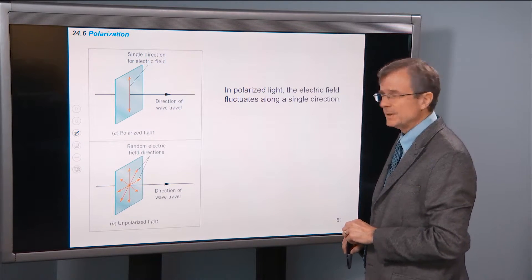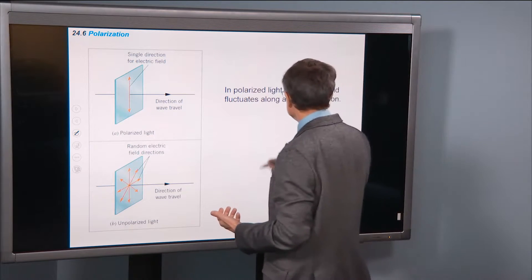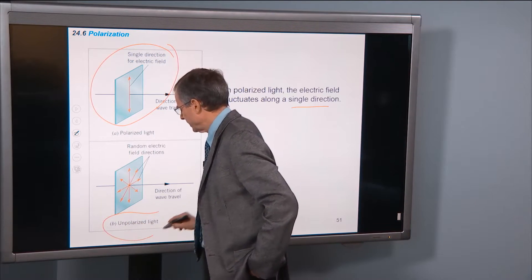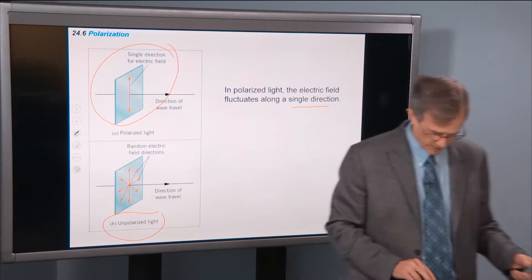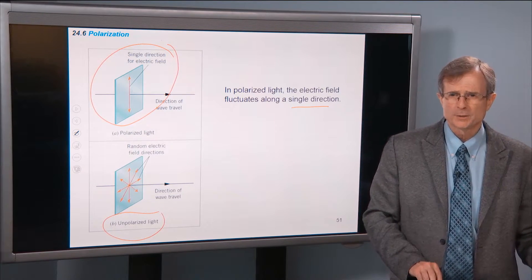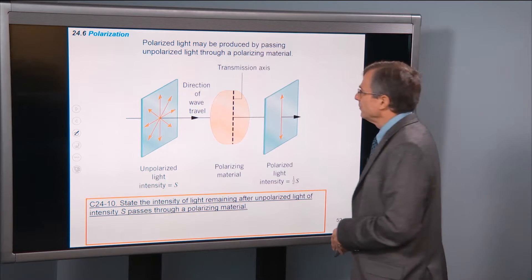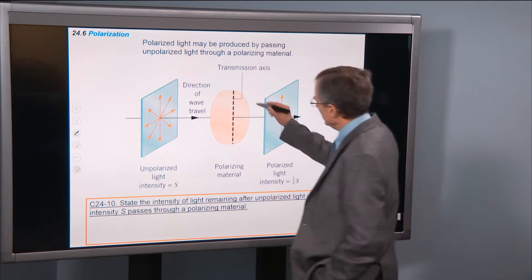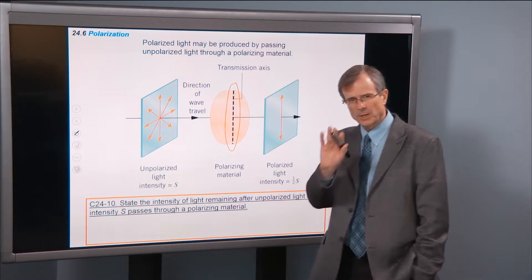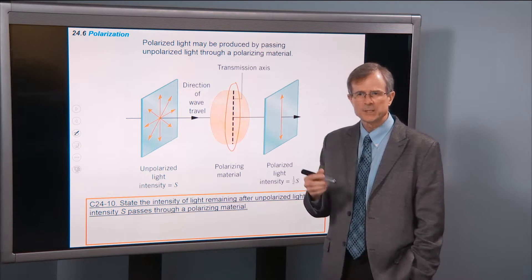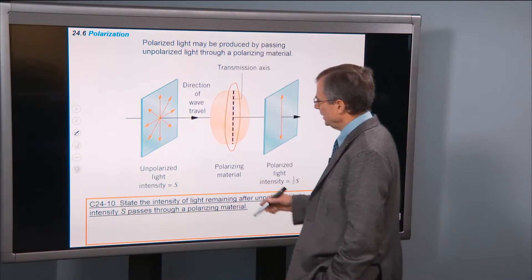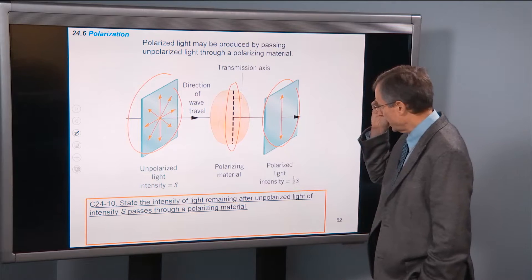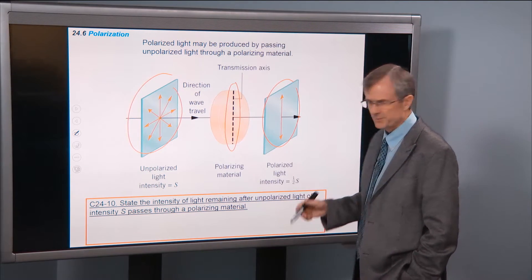In polarized light, the electric field fluctuates along a single direction — that's polarized. And this is unpolarized light that has electric fields in a random variety of directions. Polarized light may be produced by passing unpolarized light through a polarizing material as we've talked about. The axis of this polarizer — it's called the transmission axis — selects from this unpolarized light only the portion of it that has its electric field in that same direction.